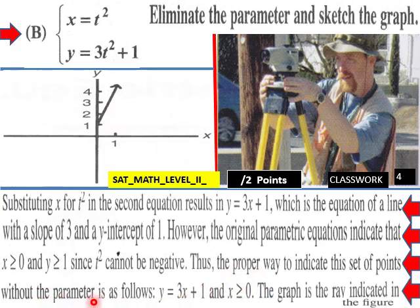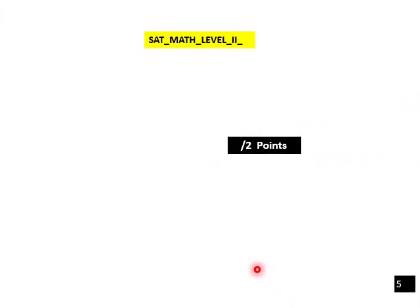Thus the proper way to indicate this set of points without the parameter is as follows: Y equals 3X plus 1 with X greater than or equal to 0, so we move off in this direction. The graph is indicated in the figure.